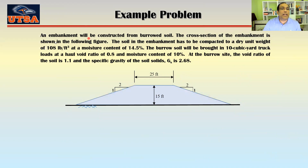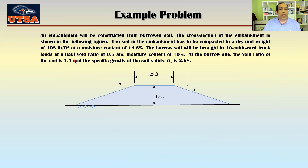An embankment will be constructed from borrowed soil. The cross section of the embankment is shown in the figure. The soil in the embankment has to be compacted to a dry unit weight of 108 pounds per cubic feet at a moisture content of 14.5 percent. The borrowed soil will be brought in 10 cubic yard truck loads at a haul void ratio of 0.8 and moisture content of 10 percent.